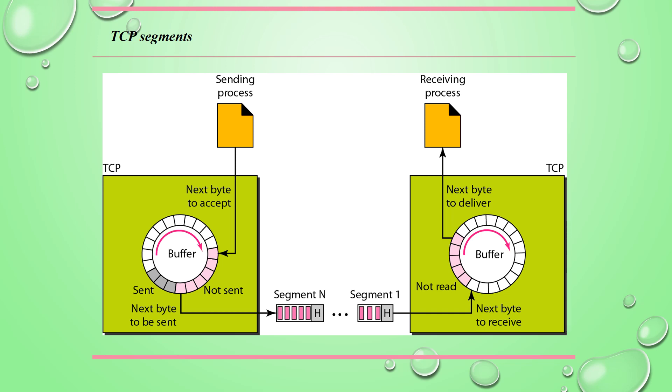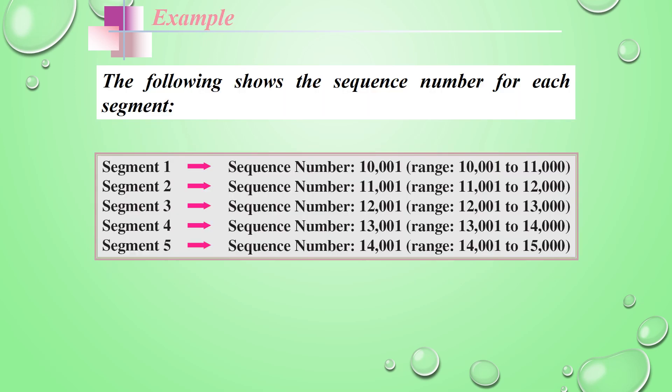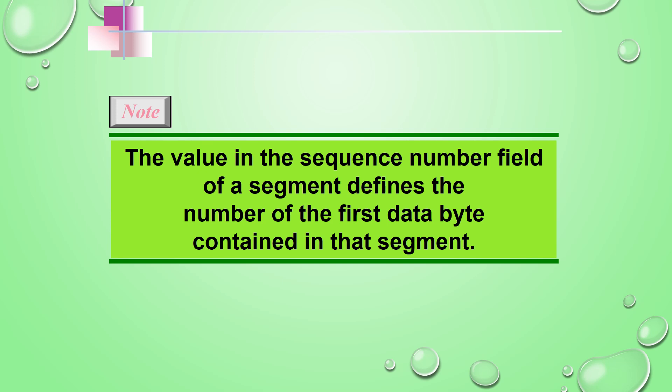The bytes of data being transferred in each connection are numbered by TCP. The numbering starts with a randomly generated number. For example, segment one may have sequence number 10001 with range 10001 to 11000, segment two follows similarly, and so on up to segment five with numbers 14001 to 15000. The value of the sequence number field defines the number of the first data byte contained in that segment.